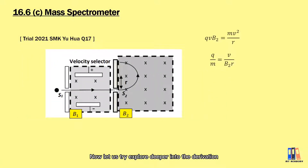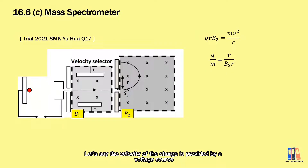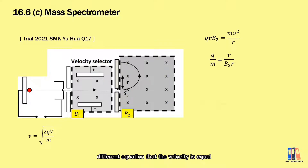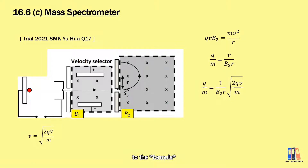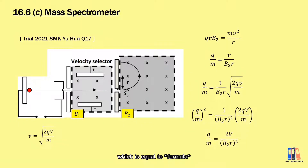Now let us explore the derivations further. If the velocity of the charge is provided by a voltage source, from the previous discussion we derived that the velocity equals the square root of 2qV divided by m. So instead of using v equal to E over B, we use this different equation. Rearranging, we obtain the third equation for charge per mass, which equals 2V divided by the square of B₂r.